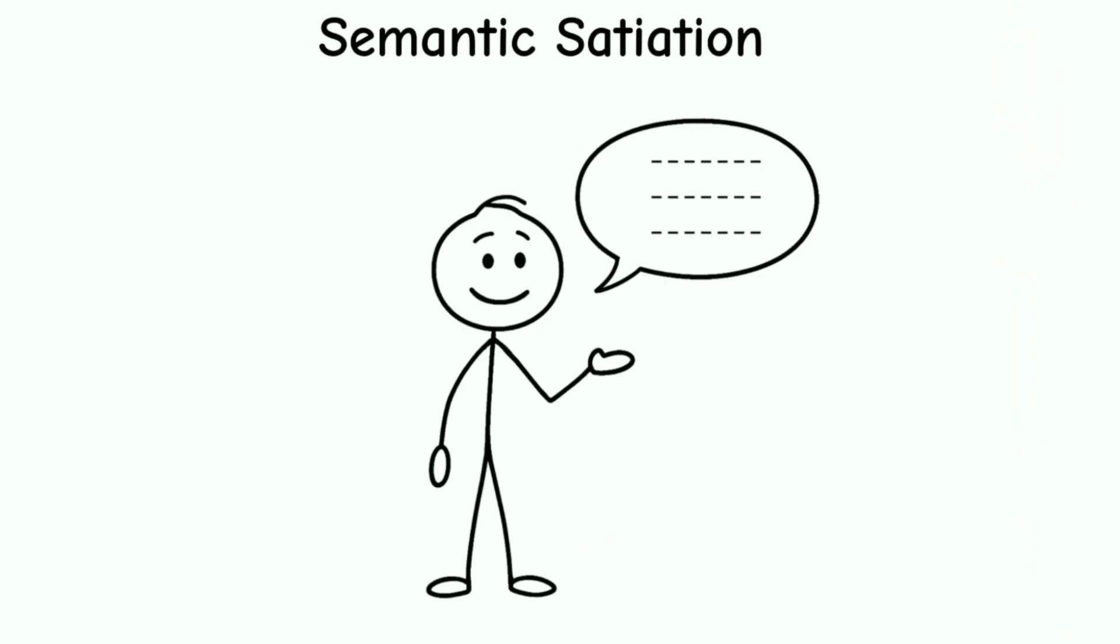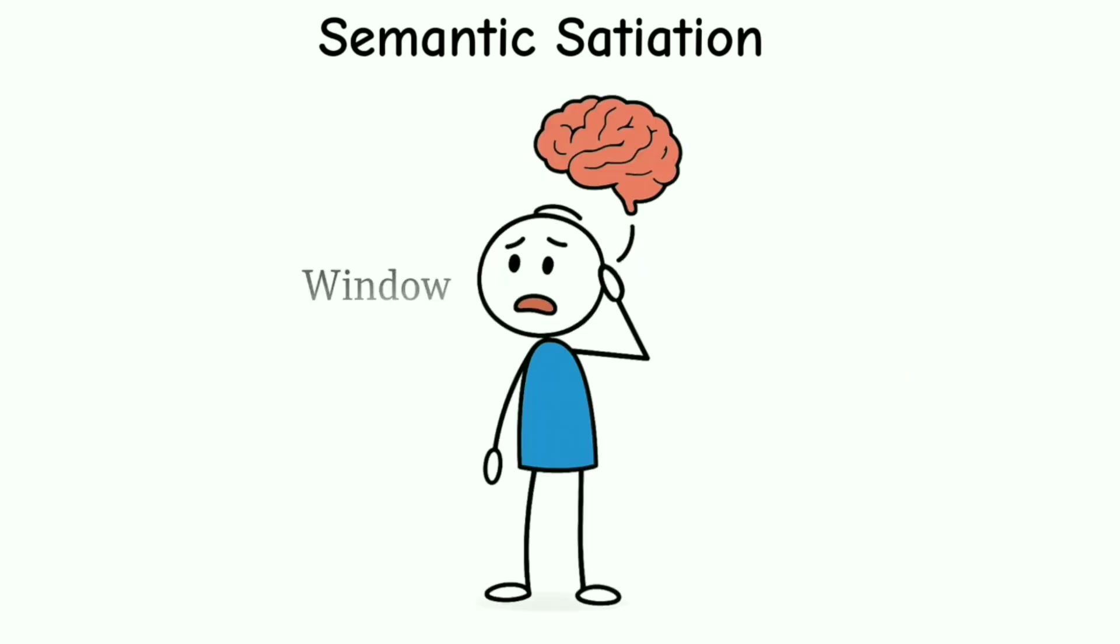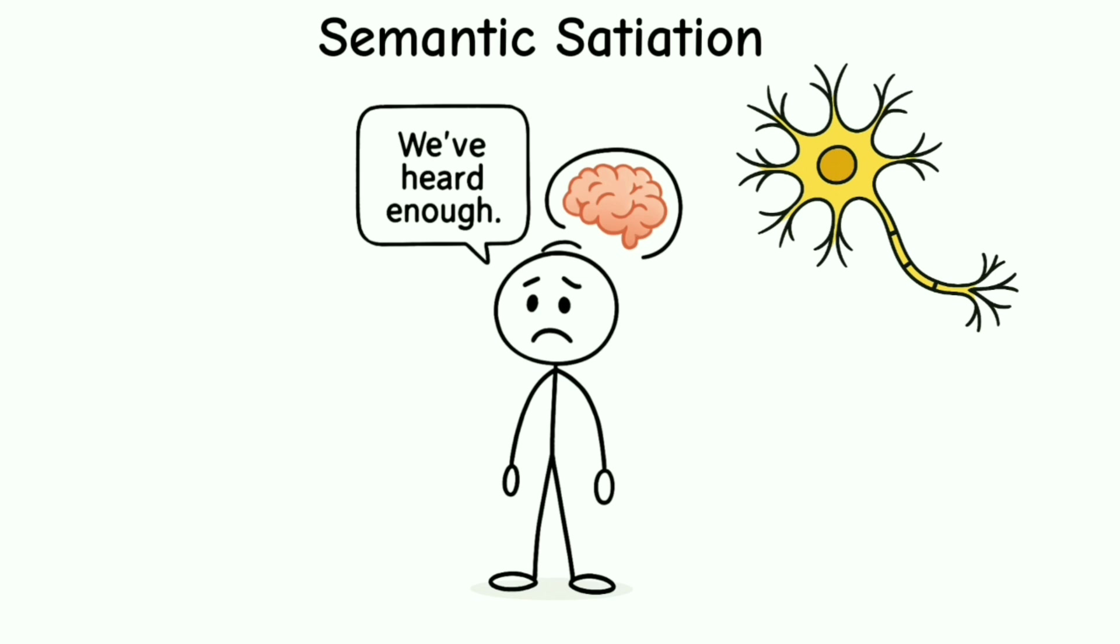Semantic satiation: repeat a word enough times and it starts sounding like gibberish. Try window, window, window, window. After 20 plus times, your brain stops connecting the sound to meaning. The neurons basically say we've heard enough. It's like your brain unsubscribes from the word.